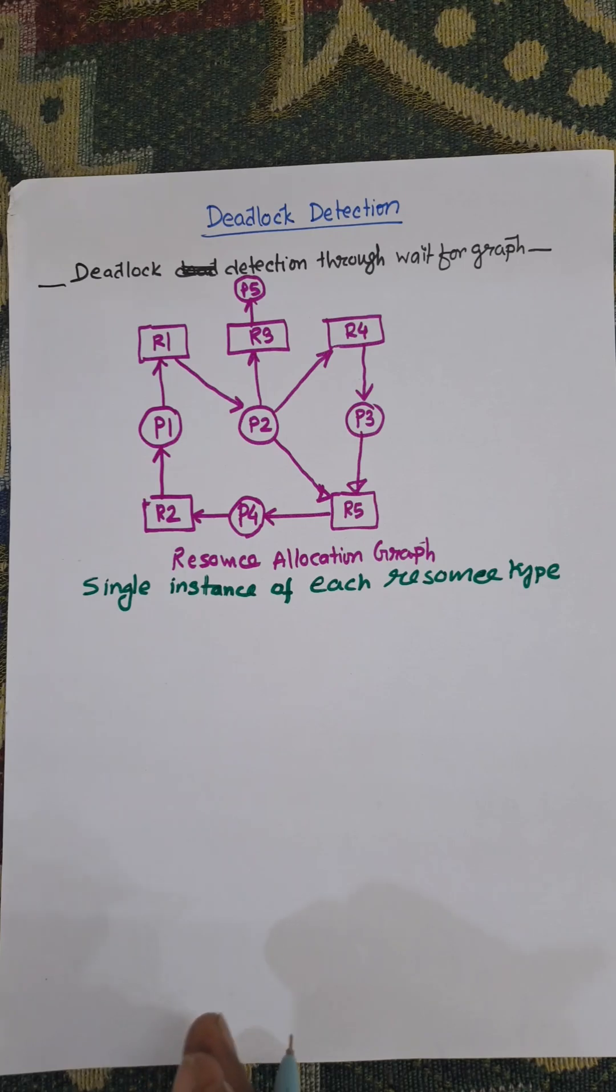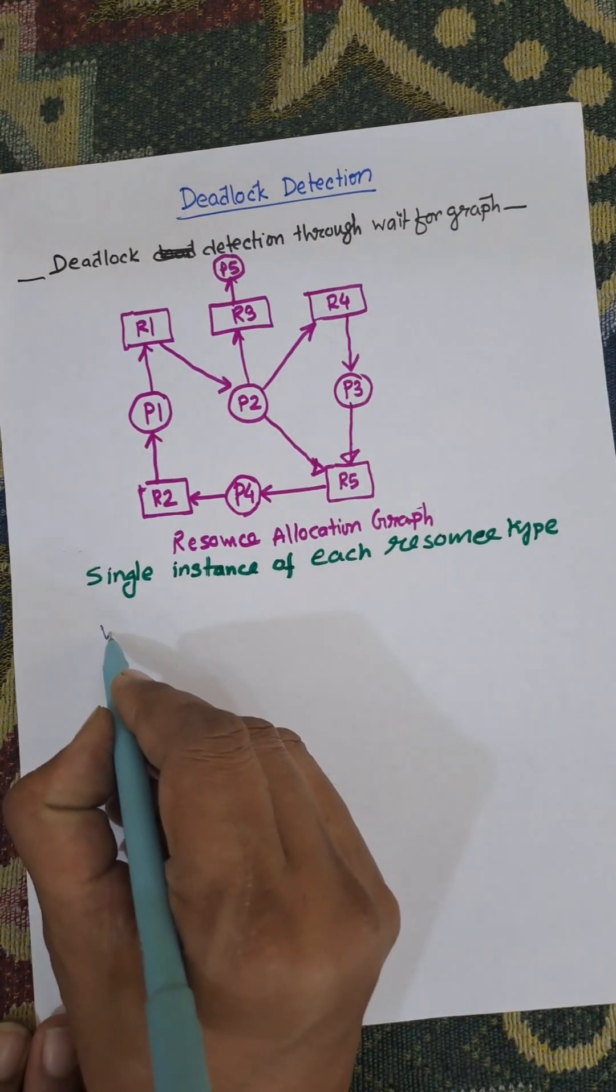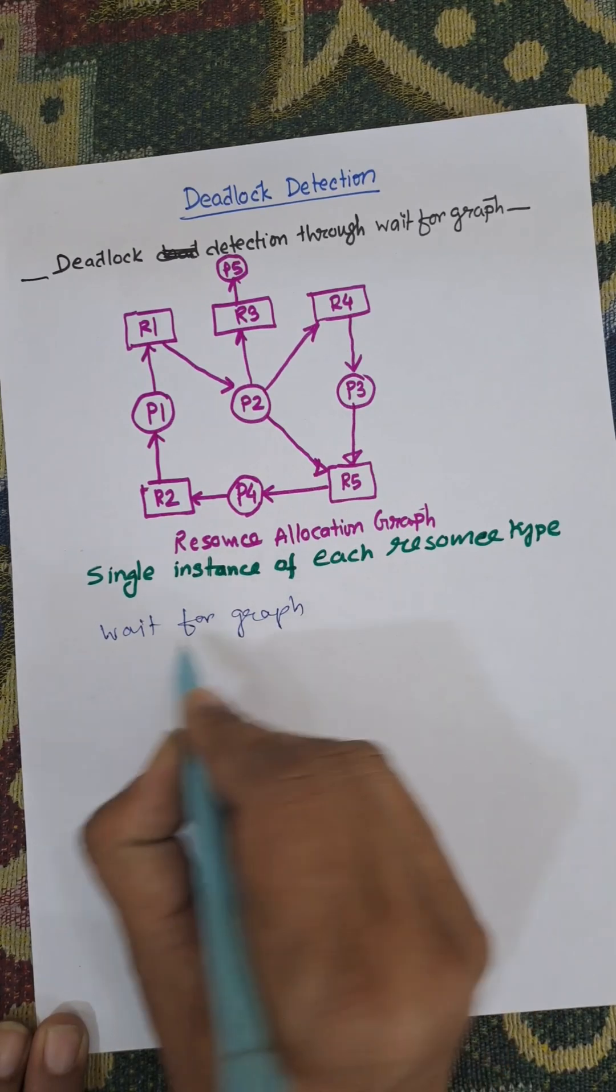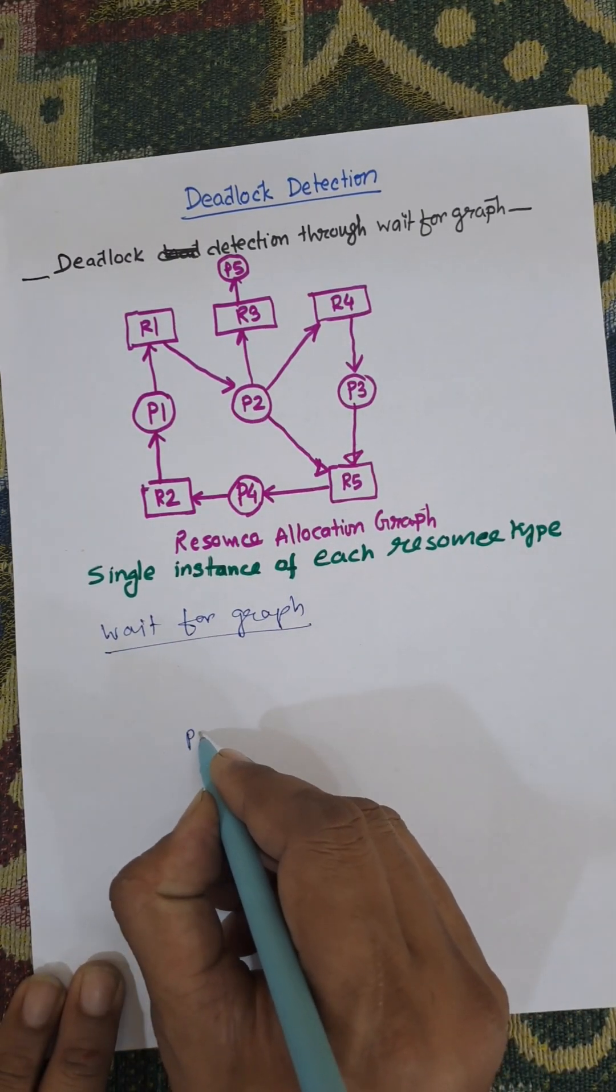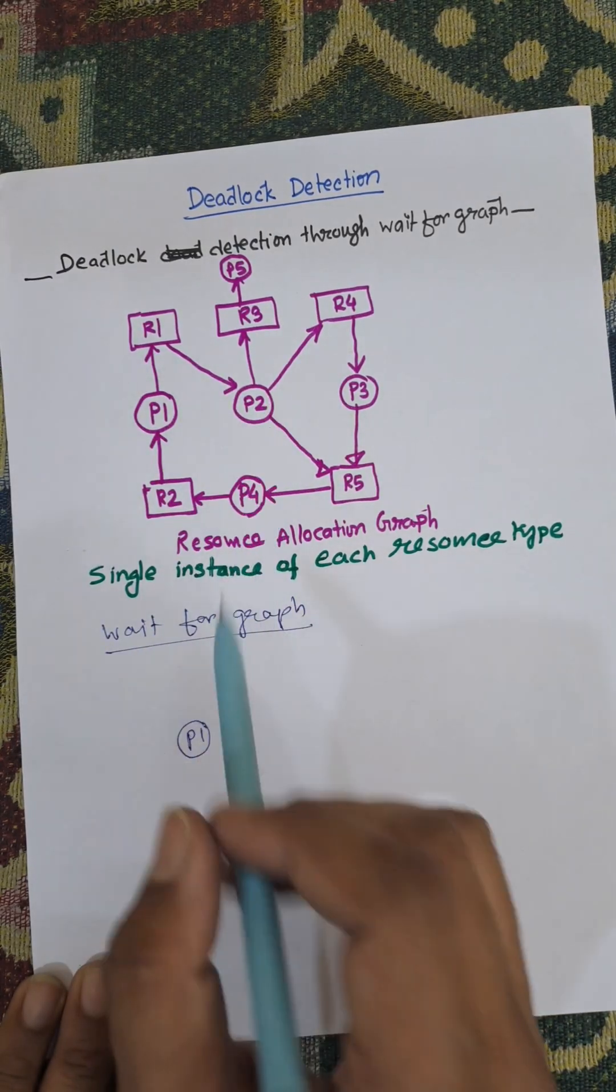First of all we need to create a wait-for graph. Wait-for graph means only process P1 requesting to R1 and then goes to P2, this means P1 to P2.